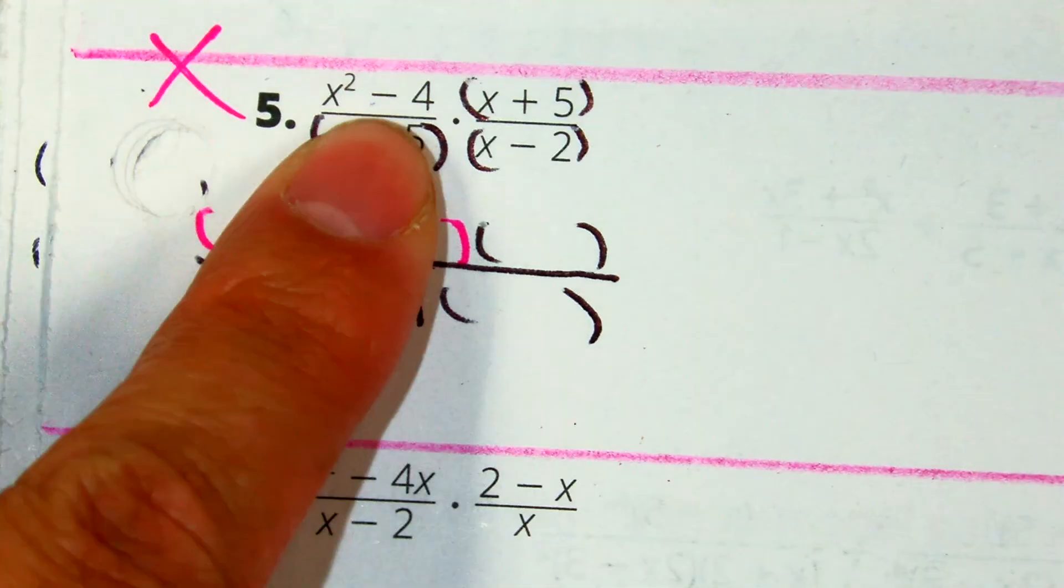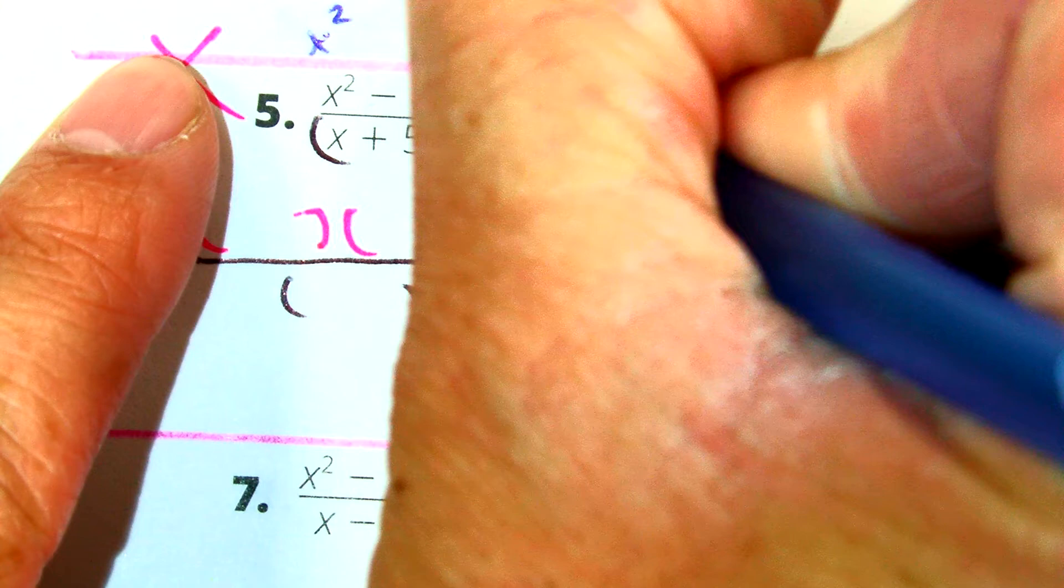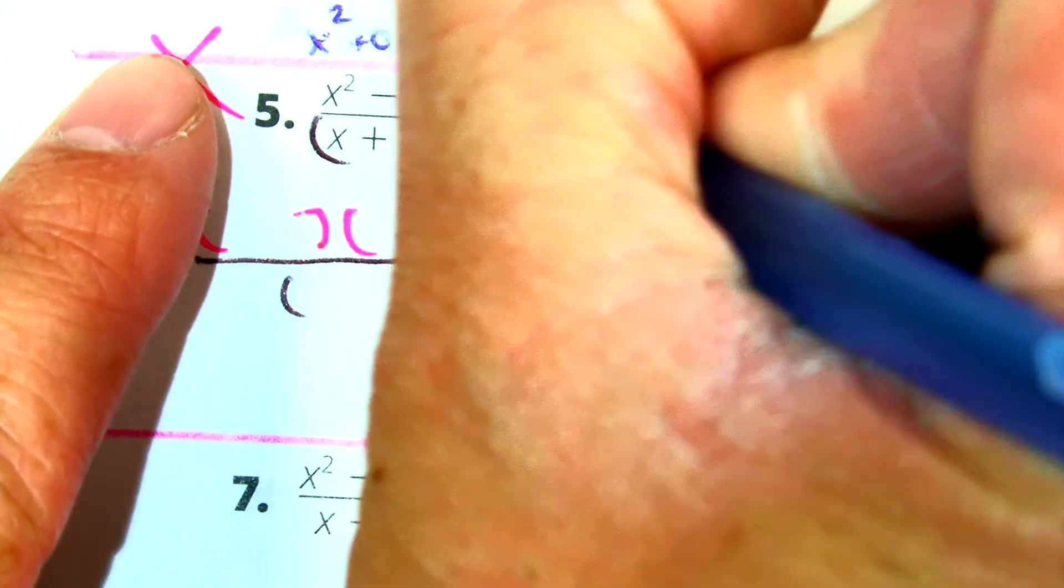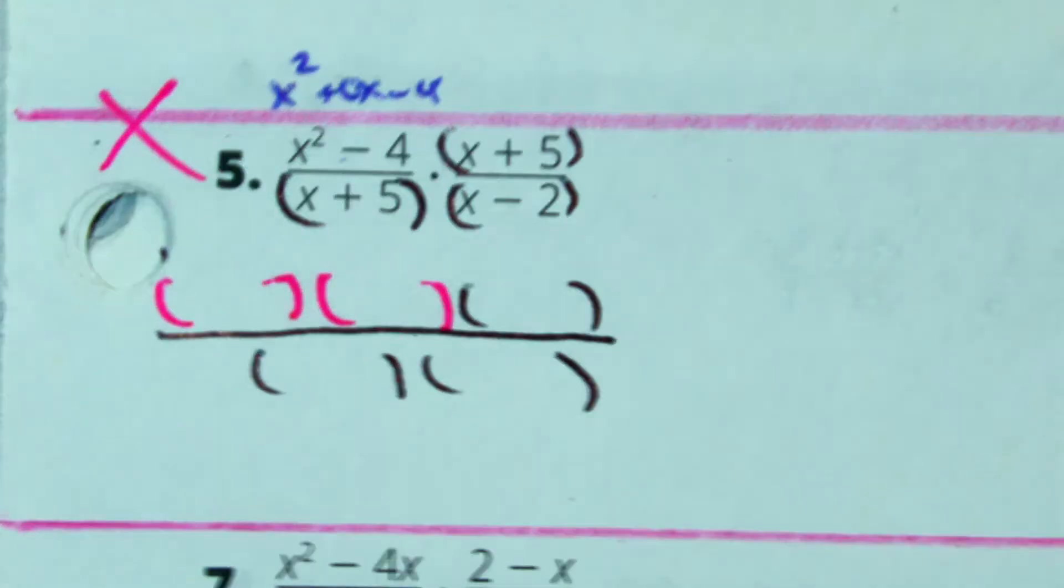What do we add between the x squared and negative 4 to help us factor this?